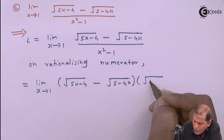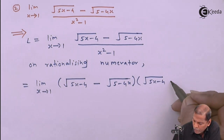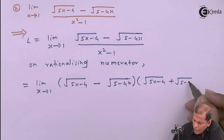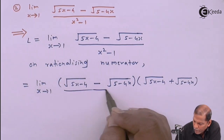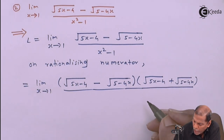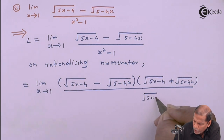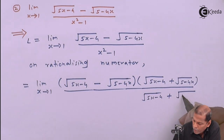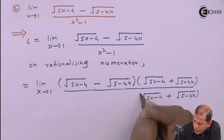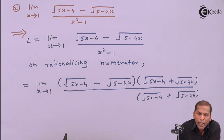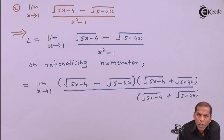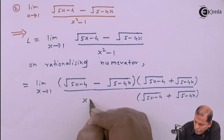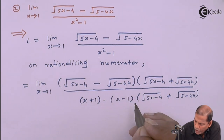We write the first bracket as square root of (5x minus 4) minus square root of (5 minus 4x), and the second bracket is square root of (5x minus 4) plus square root of (5 minus 4x). This same bracket is written in the denominator. Also, x squared minus 1 is of the type a squared minus b squared, so using that formula with factors (a plus b)(a minus b), we write x squared minus 1 as (x plus 1)(x minus 1).